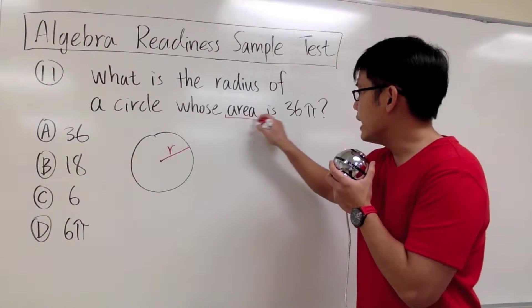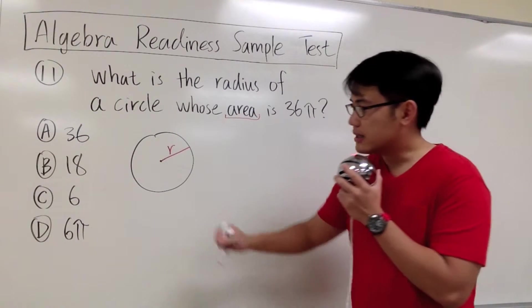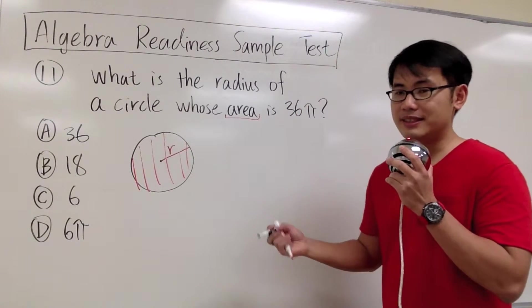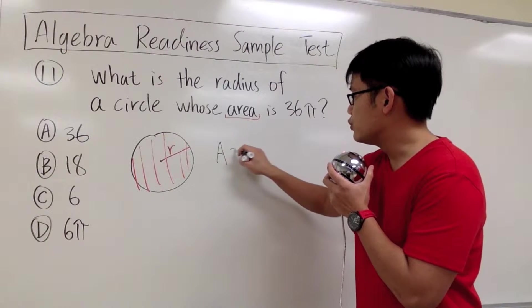And then we need to know the area. The area means the amount of space that you have inside of the circle. And then the formula is this: A, which stands for area,